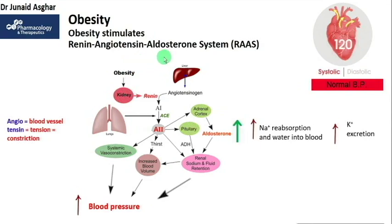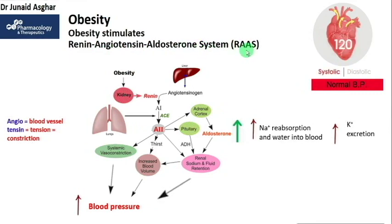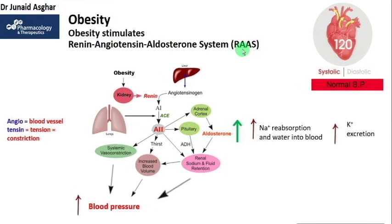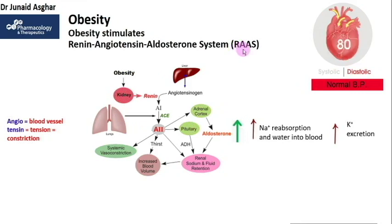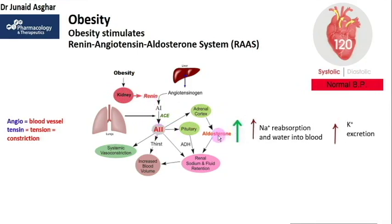Although the system is known as RAS or renin-angiotensin-aldosterone system — with two A's, one for angiotensin and one for aldosterone — we could add one more A for ADH or antidiuretic hormone. So: renin-angiotensin-aldosterone-ADH system, because ADH is a very important player in this system.